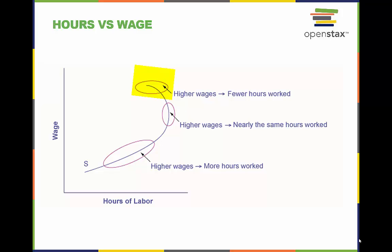The backward-bending portion of the labor supply curve at the top shows that as wages increase over this range, the quantity of hours worked actually decreases. All three of these possibilities can be derived from how a change in wages causes movement in the labor-leisure budget constraint, and thus different choices by different individuals.